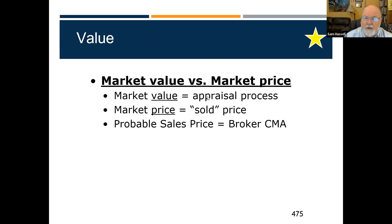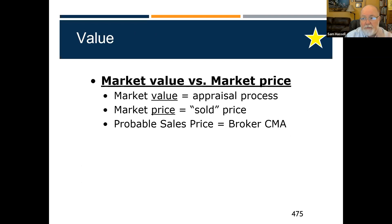There's a difference between market value and market price. Market value is the appraiser's opinion of value. Market price is what was actually paid — the buyer and seller acting independently. It could be different from the appraisal price — more or less. And a probable sales price is what the broker gives when doing a comparative market analysis.